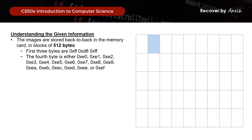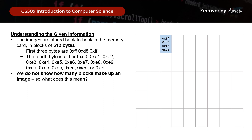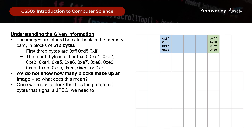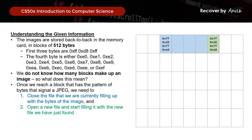Even after we locate a JPEG, we do not know how many of the subsequent blocks make up the image. So we will continue moving through each block of 512 bytes until we reach the next block that signals the start of another JPEG. When this happens, we need to close the file we are currently filling up and open a new file to start filling it up with the newly found JPEG.